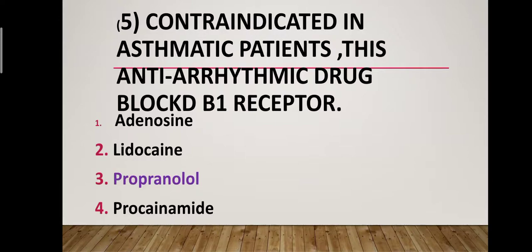Question number five: Which antiarrhythmic drug is contraindicated in asthmatic patients and blocks beta-1 receptors? Option one: adenosine. Option two: lidocaine. Option three: propranolol. Option four: procainamide. Correct answer is option three — propranolol. Propranolol is contraindicated in asthmatic patients; this antiarrhythmic drug blocks the beta-1 receptor.